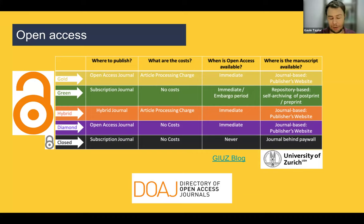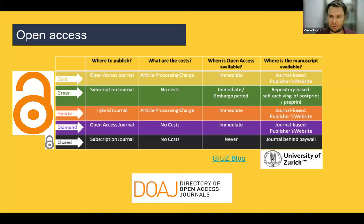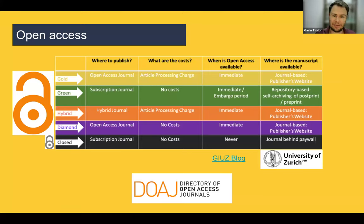A lot of people's first exposure to open science comes during the publication process through open access publishing. Before about 20 years ago, there was only one route to publication — going through a subscription journal. You didn't have to pay to submit, except sometimes color fees for printing, but everything was behind a subscription paywall. If you didn't have an expensive subscription, you couldn't access much of that research. This built on the old-fashioned model of physical printed journals.